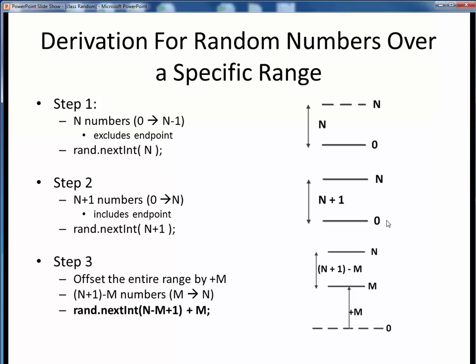In step two, let's add the top endpoint to our possible random values. Now we have N plus one possible random values from zero up to, and now including, N. And to implement this, all we need to do is add one to the prior expression in code. So now, for example, if N is still equal to 100, now we have 101 possible values from zero up to 100 now. So far, so good.